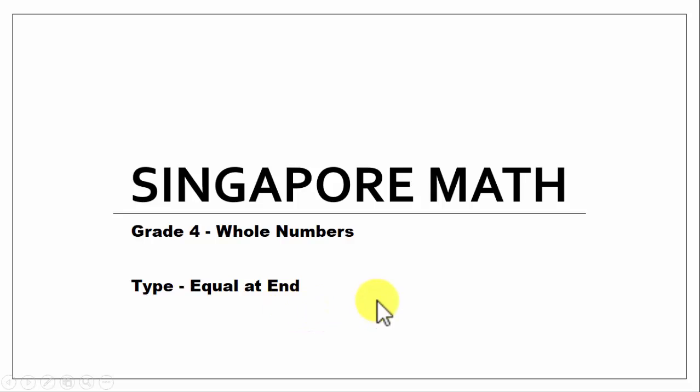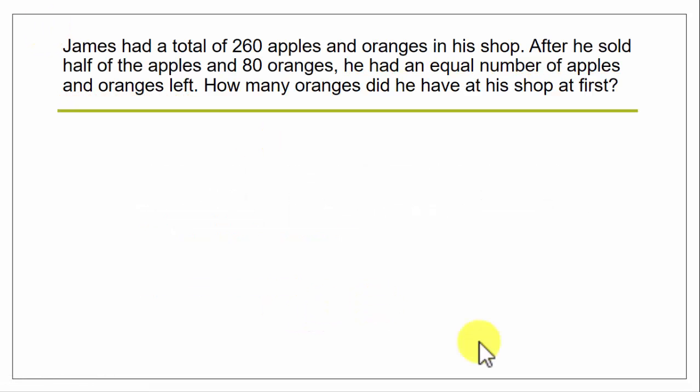Let's see what this means. The question is: James had a total of 260 apples and oranges in his shop. So this 260 is inclusive of apples and oranges. After he sold half of the apples—we have no idea how many apples he had—but he sold half of the apples and 80 oranges.